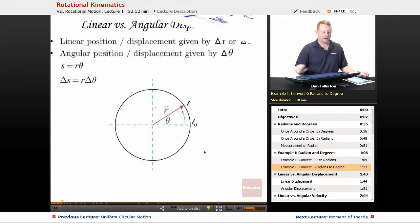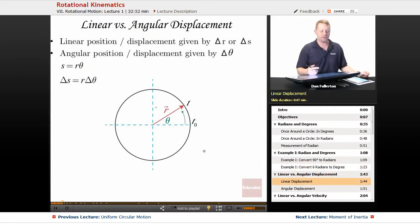So, we've got our conversions, angular versus linear displacement. Linear position displacement we've talked about is delta r or delta s. Angular position or displacement we give by delta theta, so as you go around the circle you have increasing amounts of theta. Where s, the linear distance, is r times theta, or delta s is r delta theta.